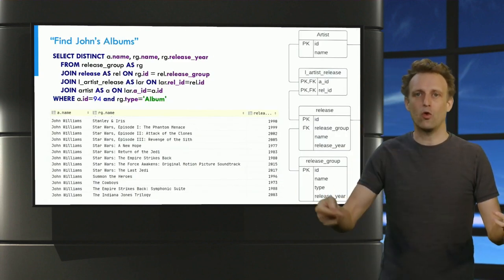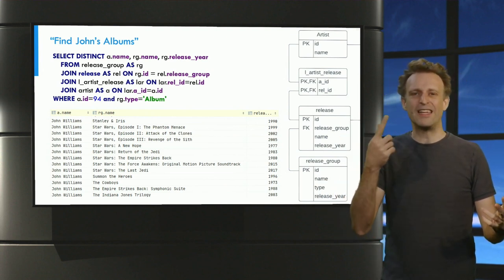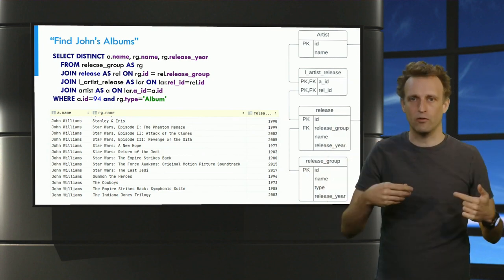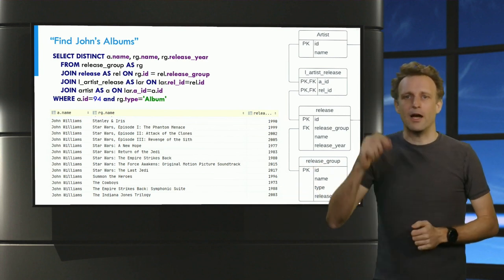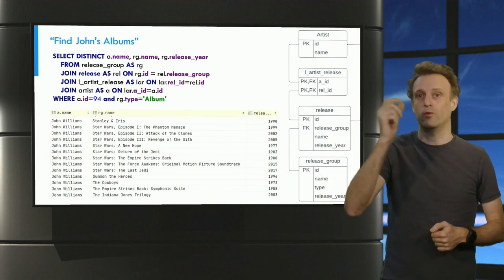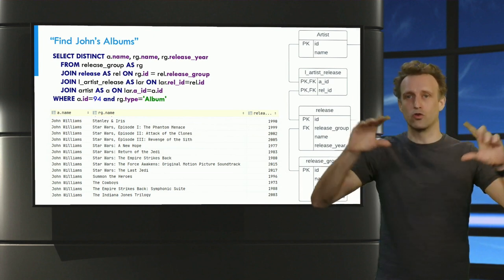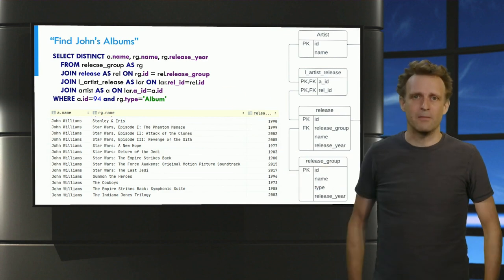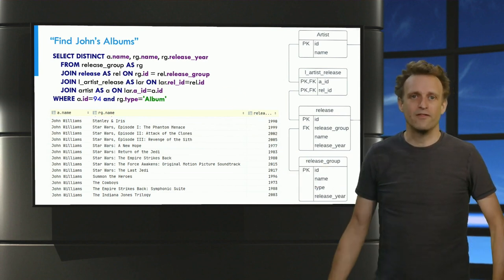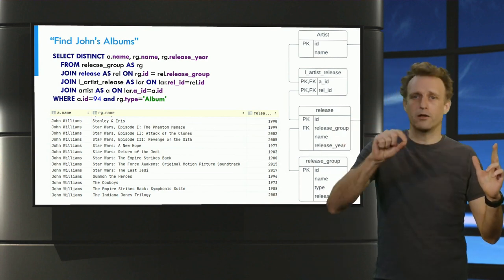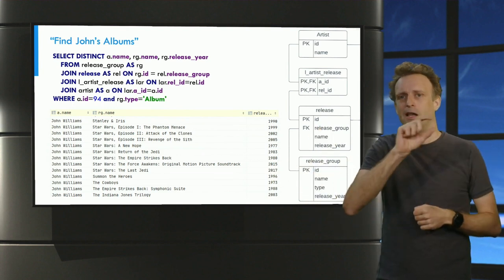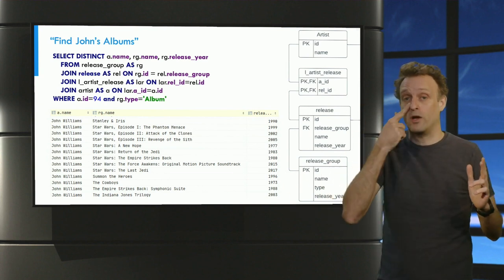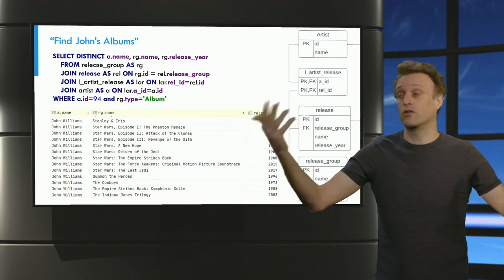Let's try another query — this time finding all of John Williams' albums, where 'album' means release groups where the type is 'album'. I start by selecting from the artist table the artist with ID 94, then join with the link_artist_release table, join that with the release table, join that with the release group table, and finally select only those where the release group type is 'album'. I also used the SQL feature of defining shortcut names for tables — so instead of always typing 'link_artist_release', I temporarily renamed it 'LAR' for this query.